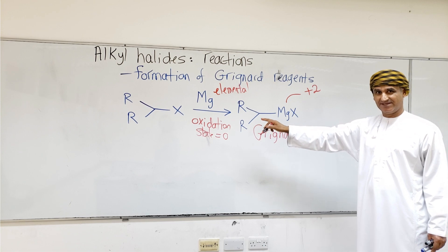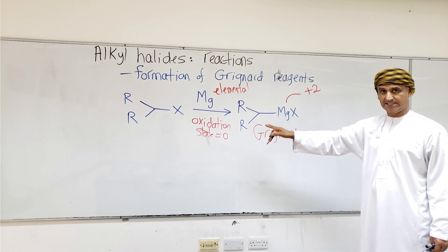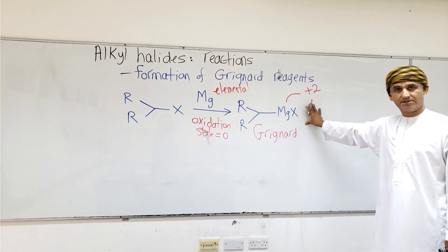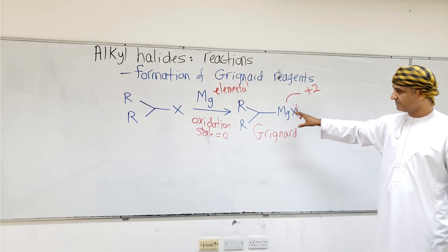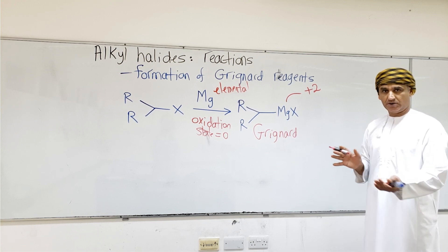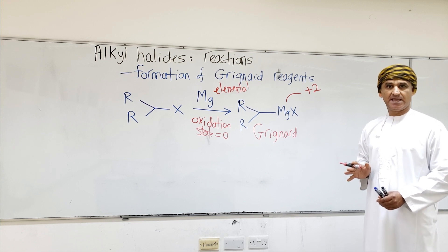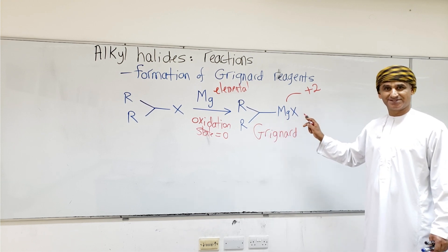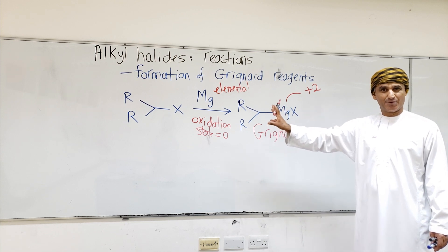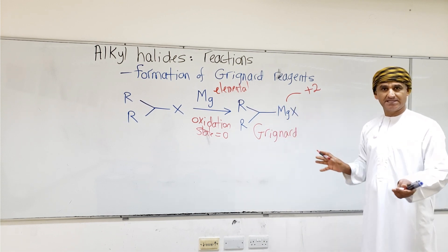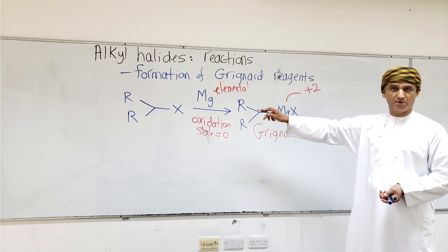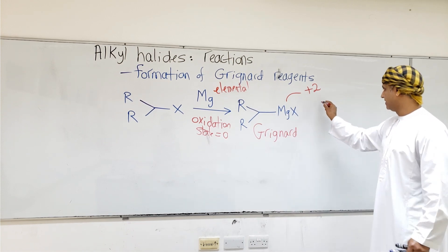The oxidation state of magnesium was zero in the elemental form, but it is plus two in the Grignard reagent. So magnesium has undergone oxidation — its oxidation state has increased from zero to plus two. This is oxidation. Also, magnesium has inserted into the C-X bond, and has added to it, so this can be described as oxidative insertion or oxidative addition.